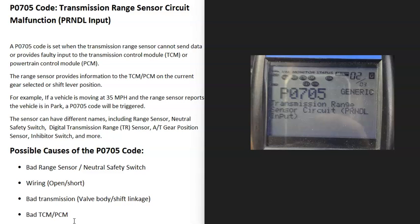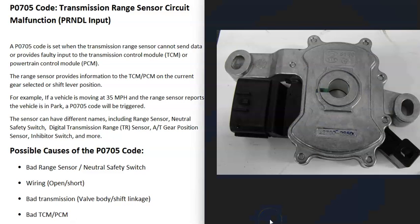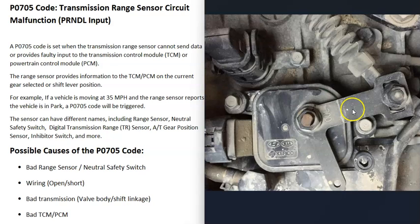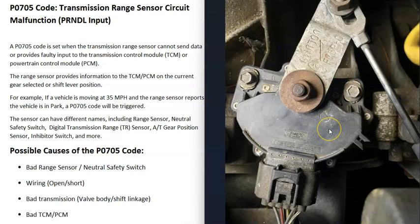Basically, there's a sensor — or switch, however you want to call it — that reports back to the vehicle's computer the location of the shifter. If the shifter is in park, the sensor reports that back to the computer. If the shifter is in drive, it reports that back as well.